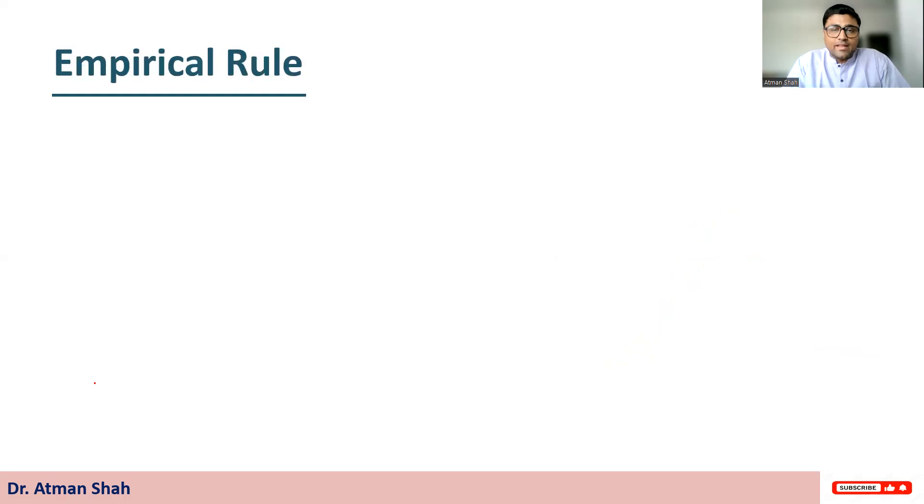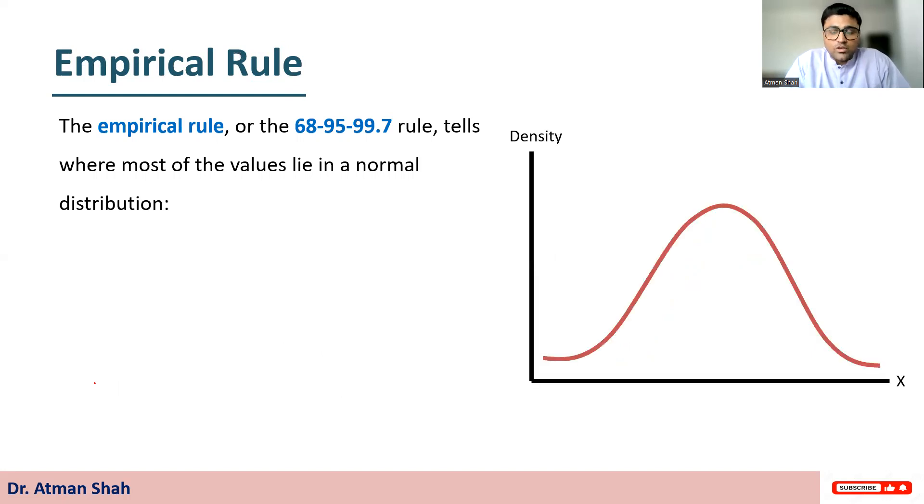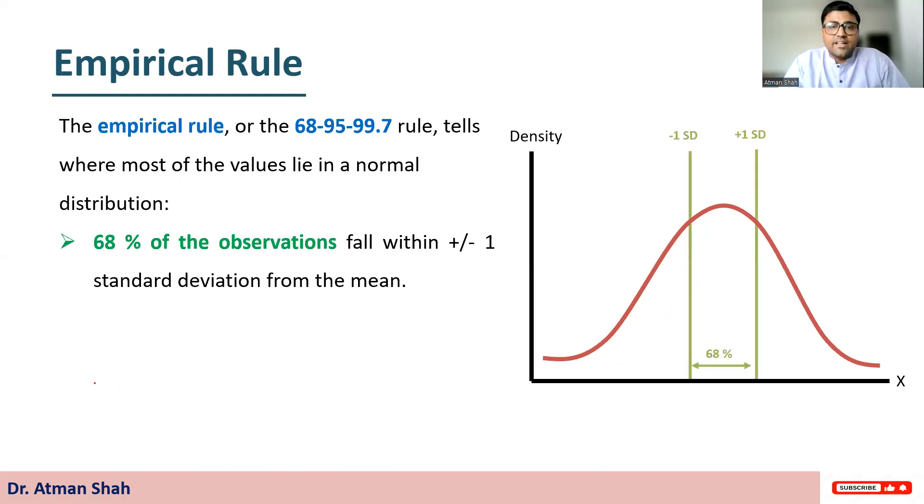Now what is the empirical rule? The empirical rule or the 68-95-99.7 rule tells where most of the values lie in a normal distribution. So here we have this normal curve. So 68% of the observations fall within plus and minus 1 standard deviation from the mean. You can see in the diagram. So 68% observations fall within this range.